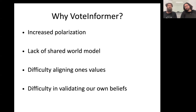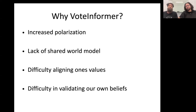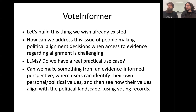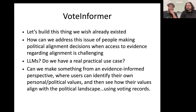We realized this about ourselves too — we don't actually know, right? Being data scientists, we thought we can easily just go find this information. It's publicly available, but it's difficult to access. We've always wanted to work on something together, and our science lives have sort of been separated. So we decided: let's build the thing we wish already existed. In doing so, how can we address this issue of people making political alignment decisions when access to information regarding those alignments is challenging?